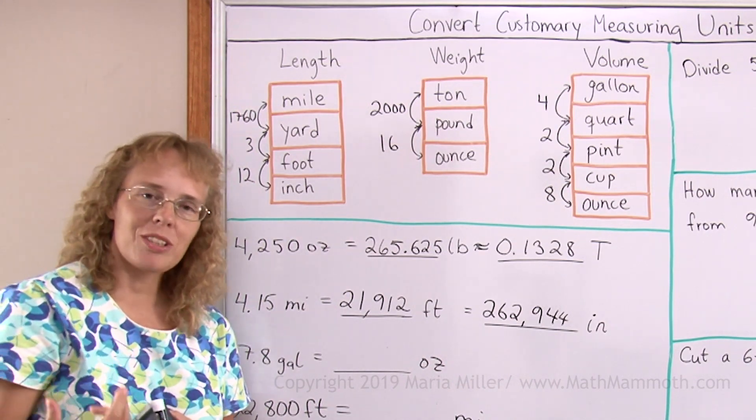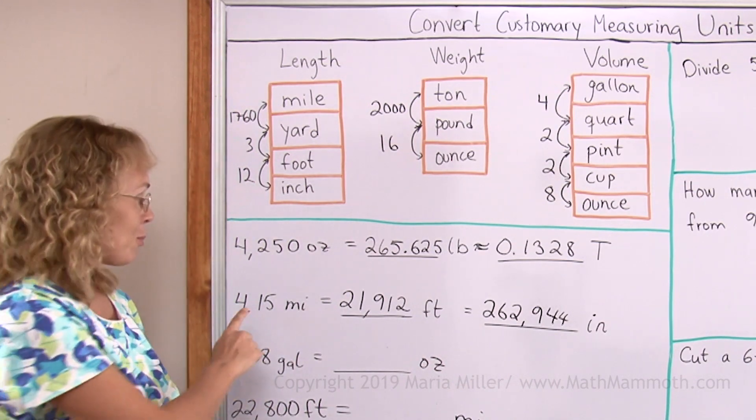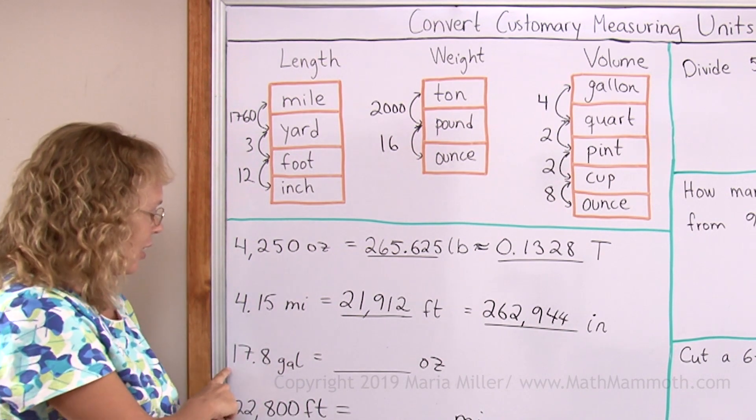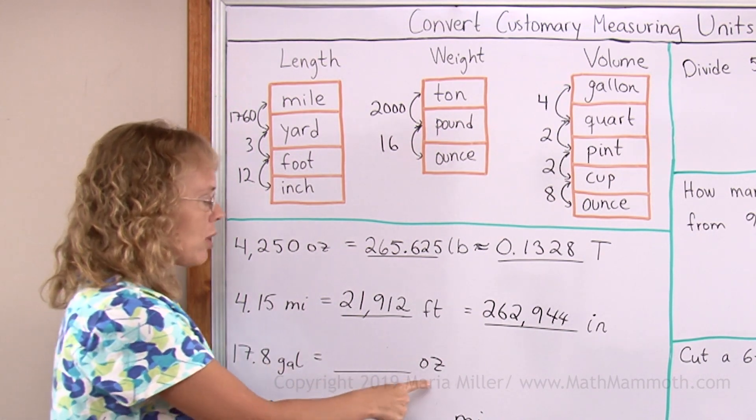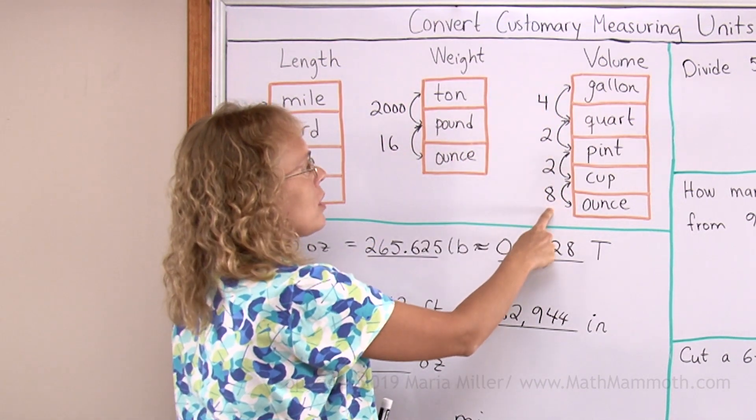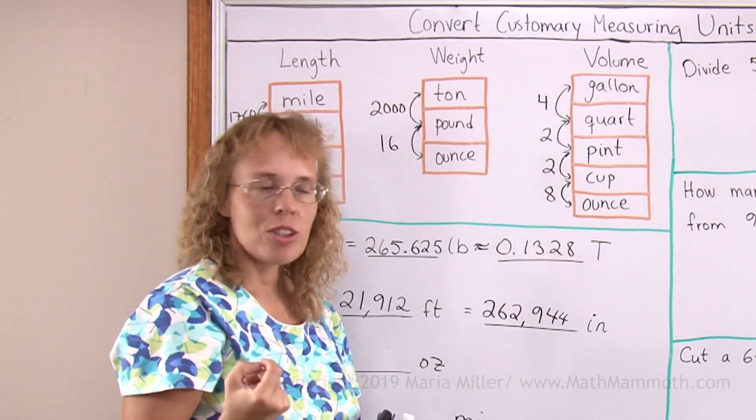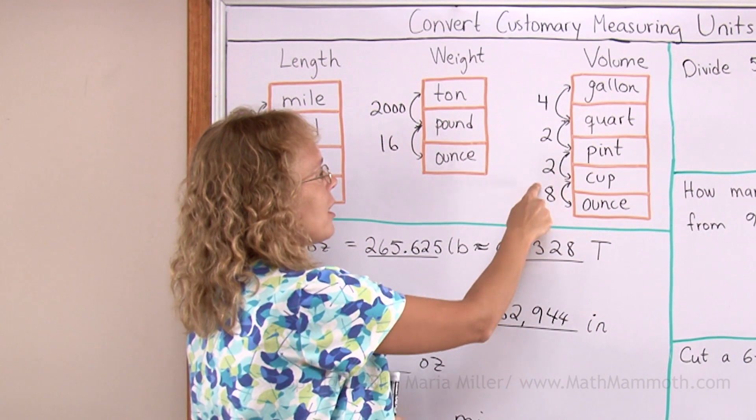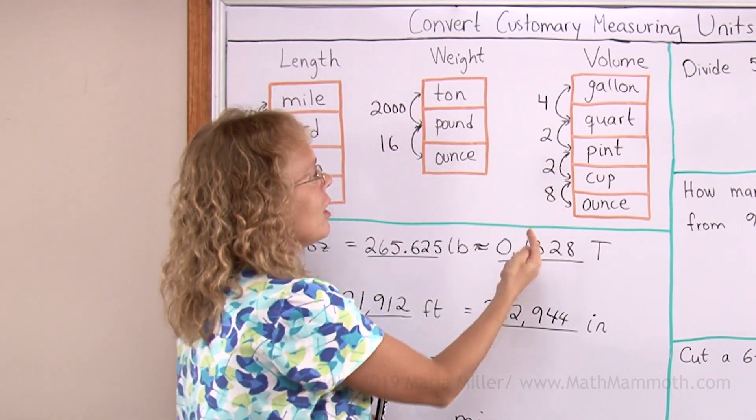And obviously the most reasonable way to give this distance would be in miles. Now 17.8 gallons into ounces. Gallons into ounces. Look, what is our conversion factor first of all? It would be 8 times 2 times 2 times 4.